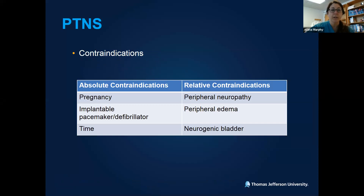Contraindications for PTNS include pregnancy and implantable pacemakers or defibrillators. Time is also a very important consideration — these patients have a treatment session once a week for 12 weeks in a row. If you have a patient with a busy schedule who travels frequently, this is not a great patient for PTNS — they need to be able to commit to coming in once a week for 12 weeks. Relative contraindications include peripheral neuropathy, peripheral edema, and neurogenic bladder.